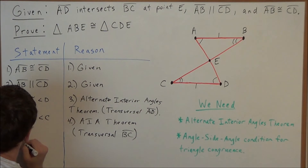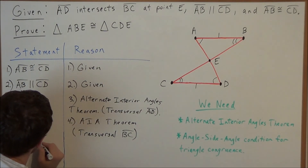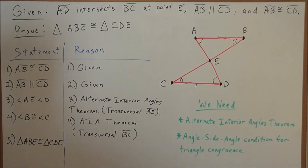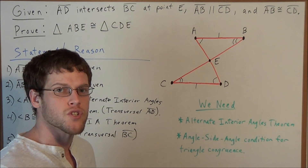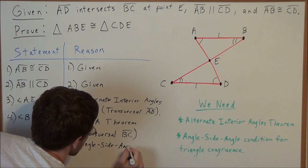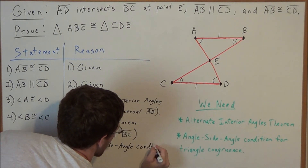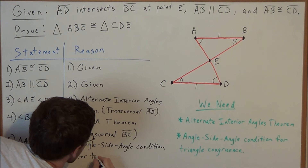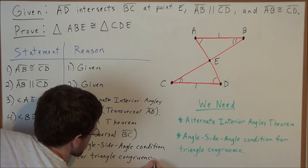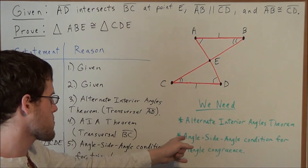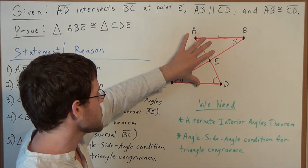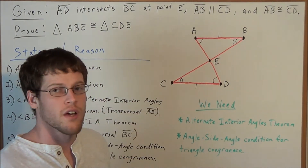So now it follows that triangle ABE is congruent to triangle CDE. The reason we use to support this claim is Euclid's angle-side-angle condition for triangle congruence. With triangle proofs, the angle-side-angle condition requires us to look for a consecutive angle-side-angle combination in both triangles that are exactly the same.